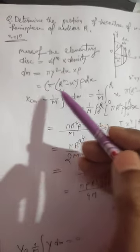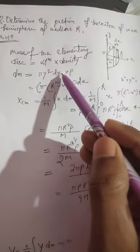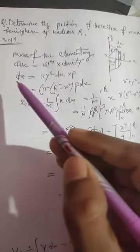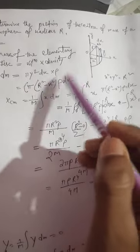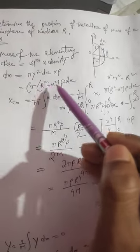In the previous video part 1, I got πy²dx·ρ as the elemental mass. From the figure, I can write y² = r² - x². If you substitute this y² here, then I will get π(r² - x²)ρdx.